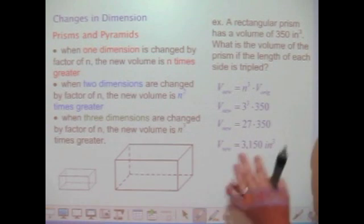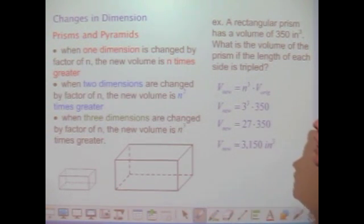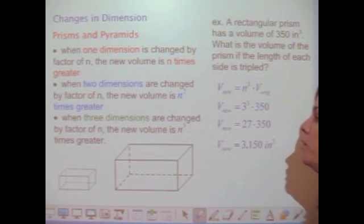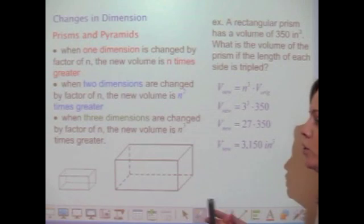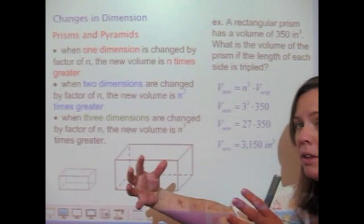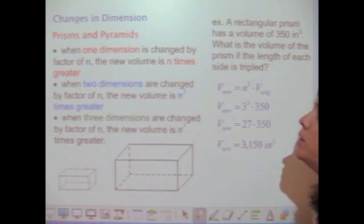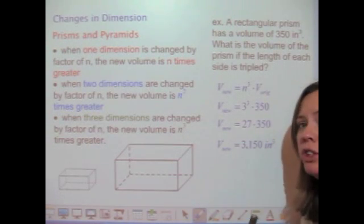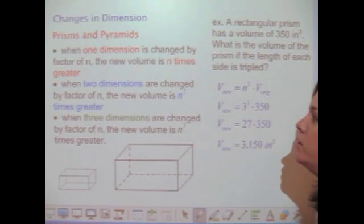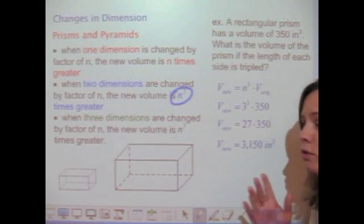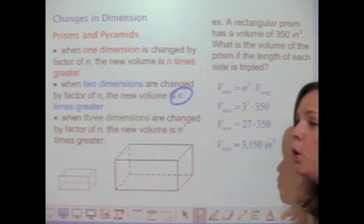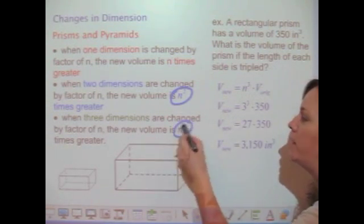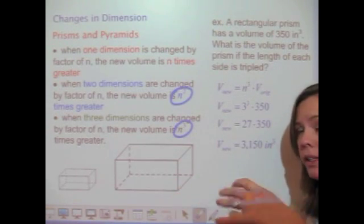If you're changing dimensions in something three-dimensional, I'd recommend the same plug-in strategy. Some general rules: if you change one dimension of a figure by a factor of n — for example, making a prism longer but not wider or taller — the new volume changes by a factor of n. If you change two dimensions by a factor of n, the new volume increases by n². If you change all three dimensions by a factor of n, the volume changes by a factor of n³.